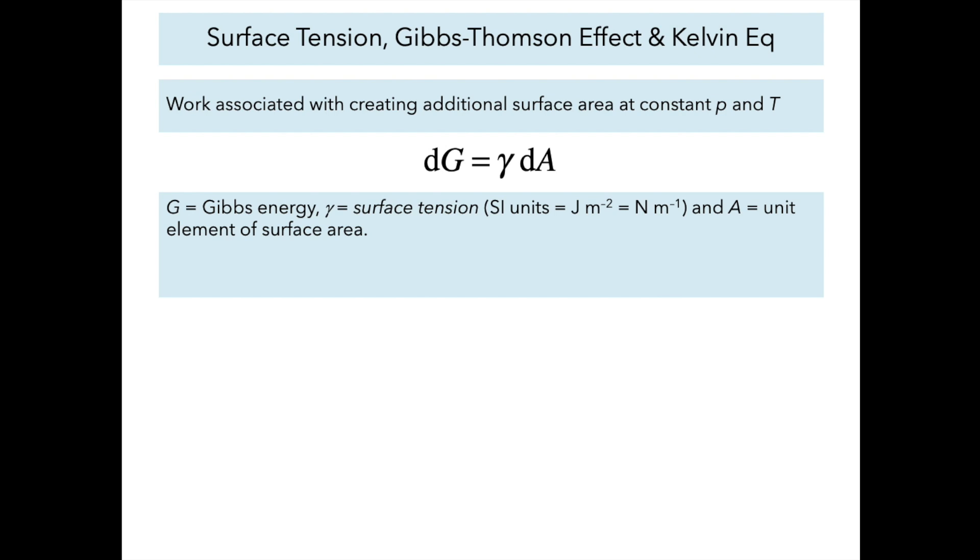We want to calculate the work associated with creating a certain area of surface. We're going to do this at constant pressure and temperature, and for a change in surface area dA, there will be a certain change in the Gibbs energy dG, and the coefficient that relates the two is gamma, the surface tension.